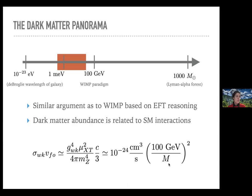A simple estimate of the annihilation rate through a Z boson, with dark matter just becoming non-relativistic so its velocity is on the order of c/3, gives about 10⁻²⁴ cm³/s, if I put in a common mass scale — the reduced mass of the dark matter with the target — and Z boson mass at around 100 GeV.